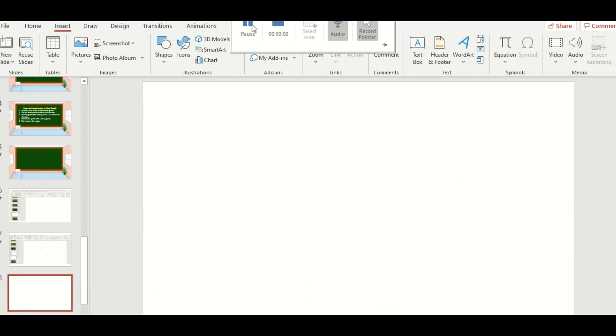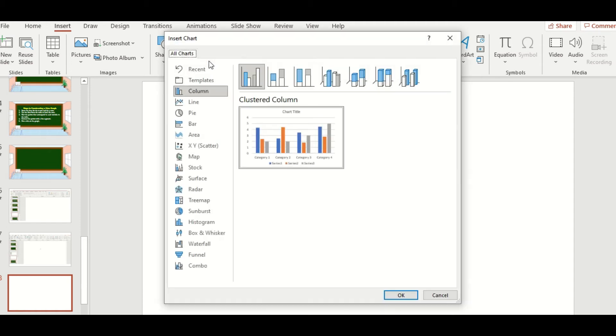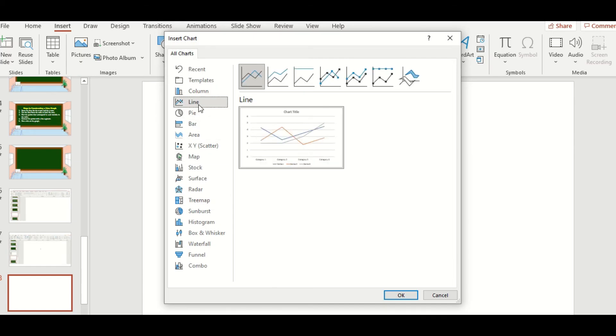I'm going to teach you how to make a graph using Microsoft PowerPoint. Just go to insert, then just click chart. Then here we have different kinds of charts or graphs. So we're going to click line because we're going to make a line graph. Then click OK.